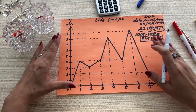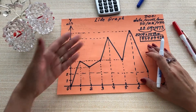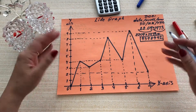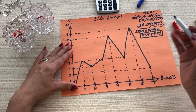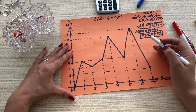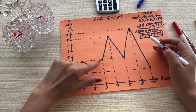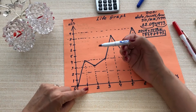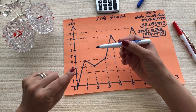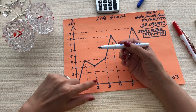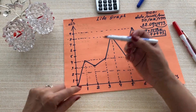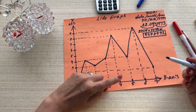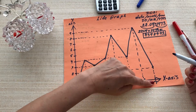Now we need to know what it means and at which age it's going to be a good time or a tough time. The next step is to figure out the age for each point. Every divider on the x-axis is 10 years: 10 years old, 20 years old, 30 years old, 40, 50, 60, 70.